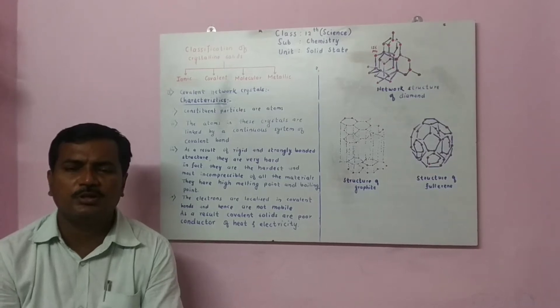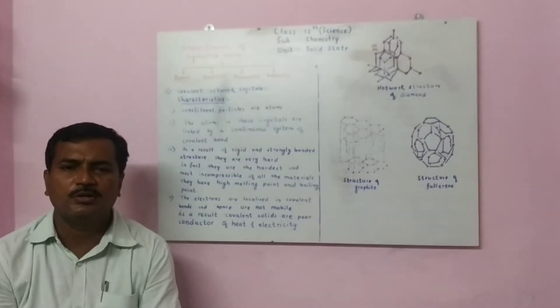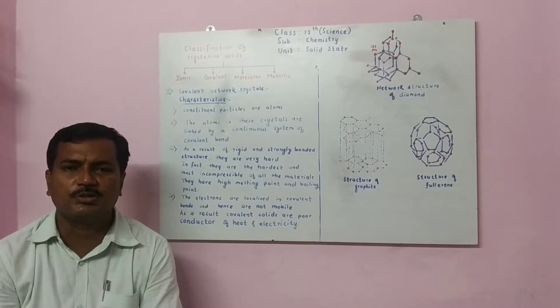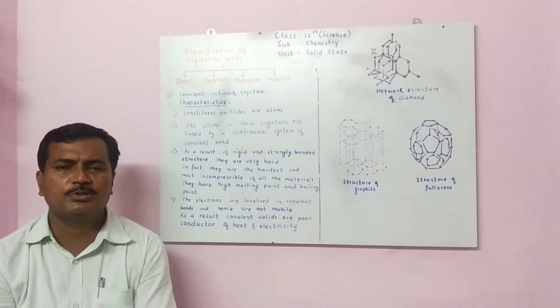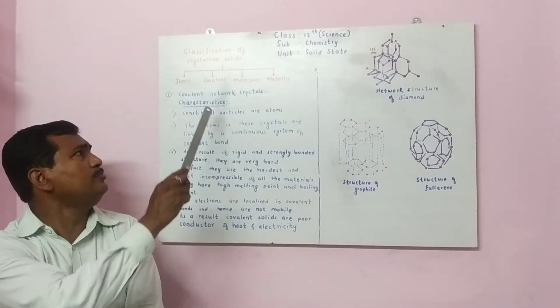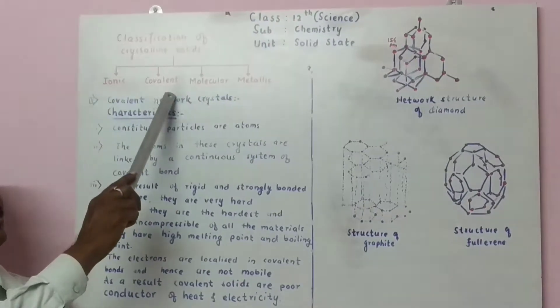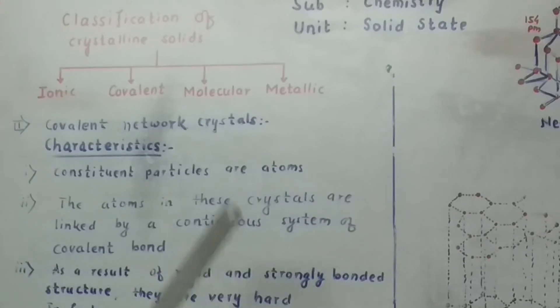Hello students, in last period we have started classification of crystalline solids. There are four types of crystalline solids: ionic, covalent, molecular and metallic solid.